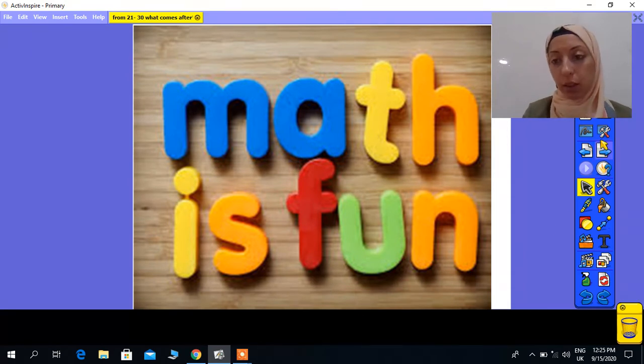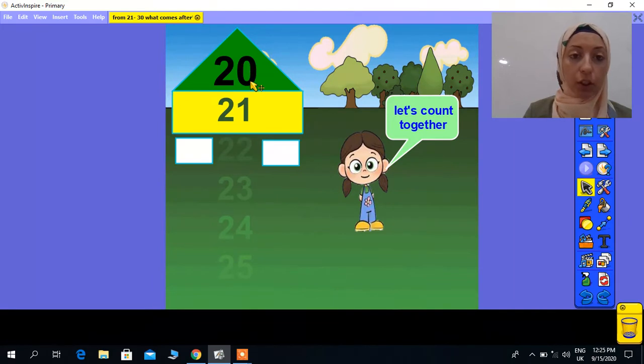We know that 2 and 0 beside each other like that will give me 20. Instead of the 0, I'll put 1, and 2 and 1 like that will be 21. So after 20, 21.